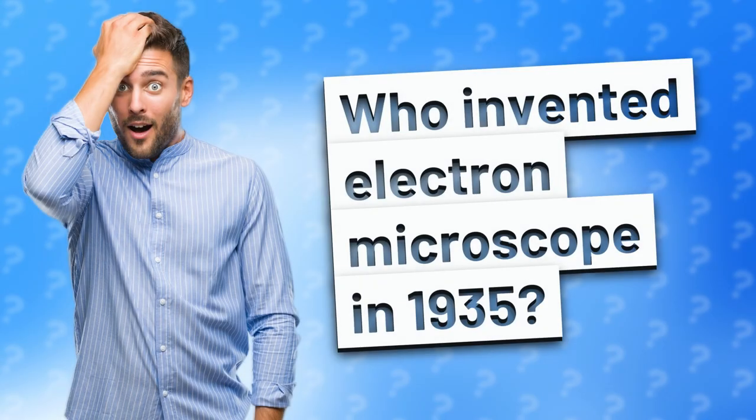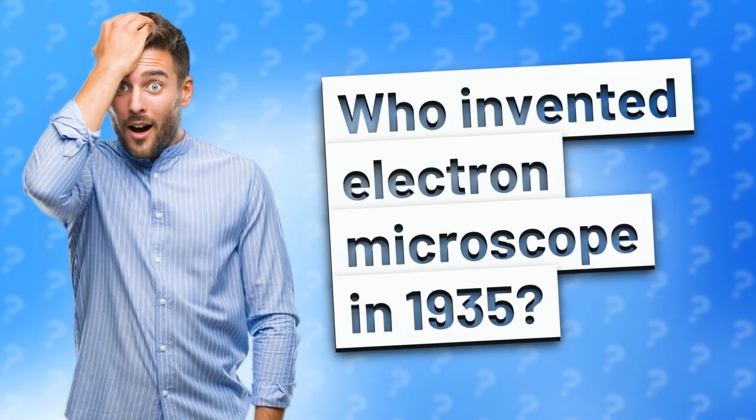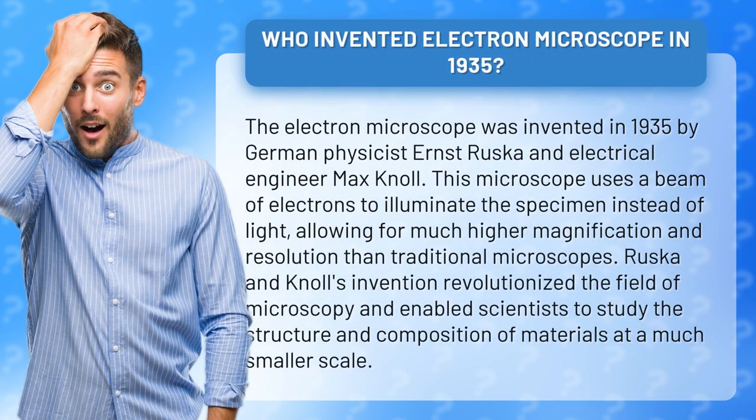Who invented the electron microscope in 1935? The electron microscope was invented in 1935 by German physicist Ernst Ruska and electrical engineer Max Noel. This microscope uses a beam of electrons to illuminate the specimen instead of light, allowing for much higher magnification and resolution than traditional microscopes.